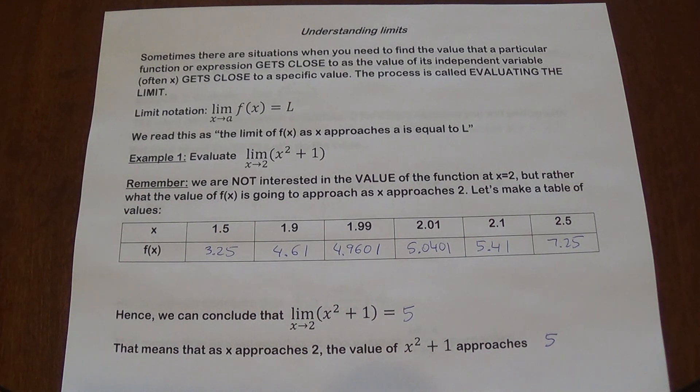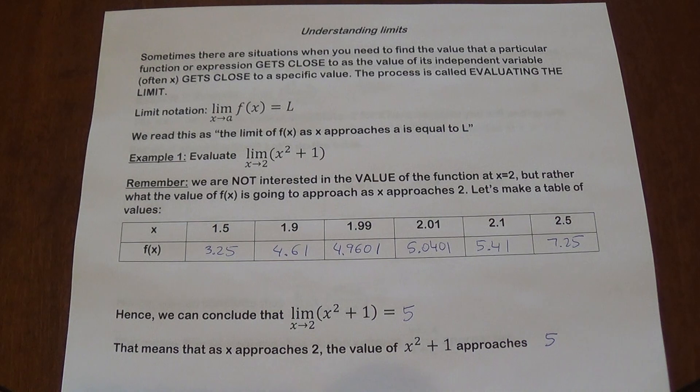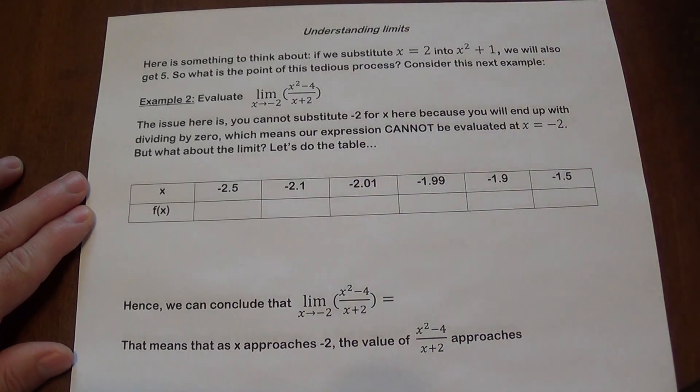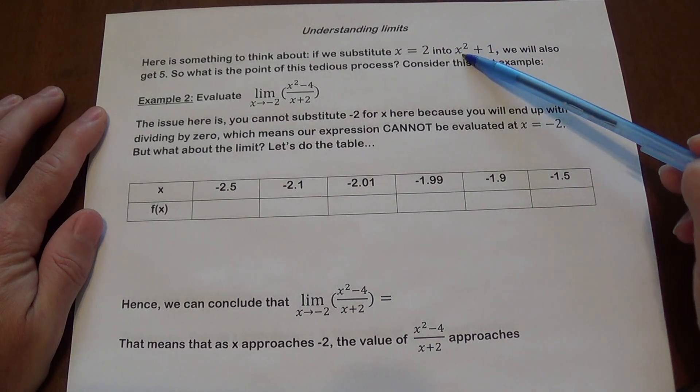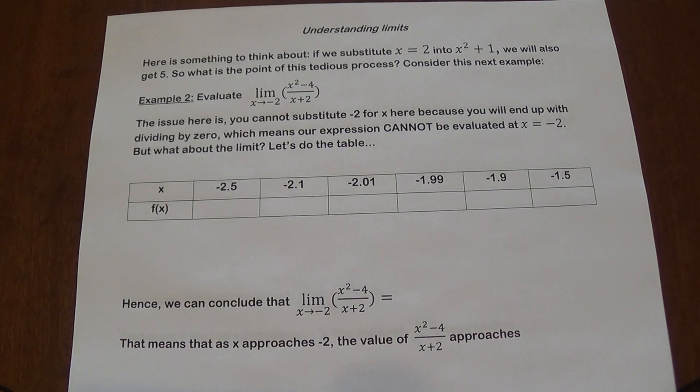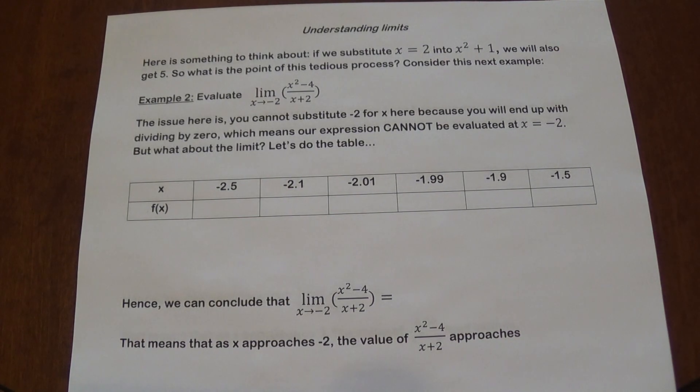This is something that you need to understand that you don't always work with the value. So here's the question. If I would have taken 2 and simply substituted it into x squared plus 1, you will get 5. So the question is, why do we go through this tedious process? Can't we just always do it like that? The answer is not always.